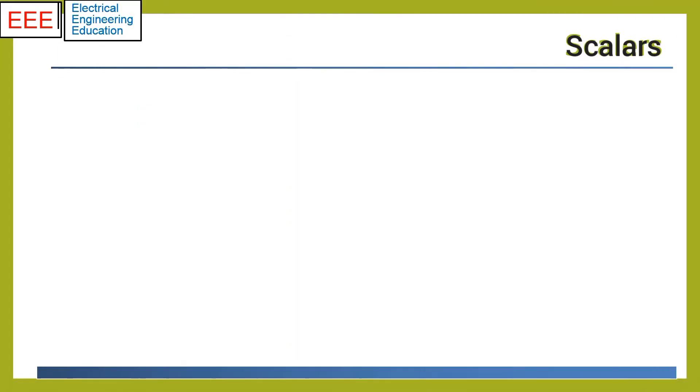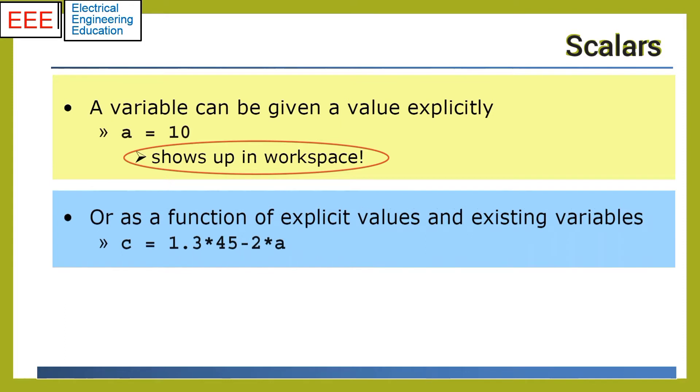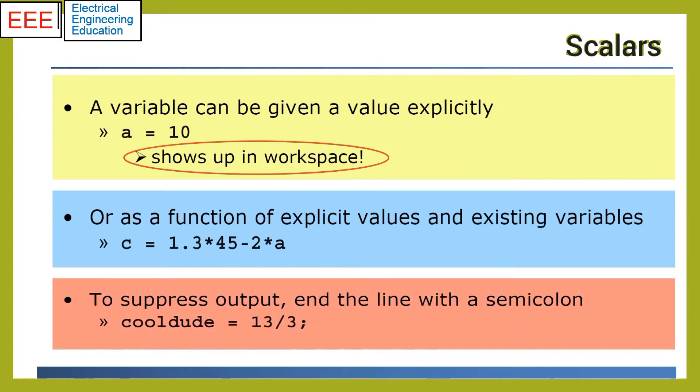In MATLAB, a scalar is a variable with one row and one column. A variable can be assigned any value explicitly. The value can be seen in the workspace or command window. Scalars are simple variables that we use in algebraic equations. The semicolon at the end of statements suppresses the output in the command window.